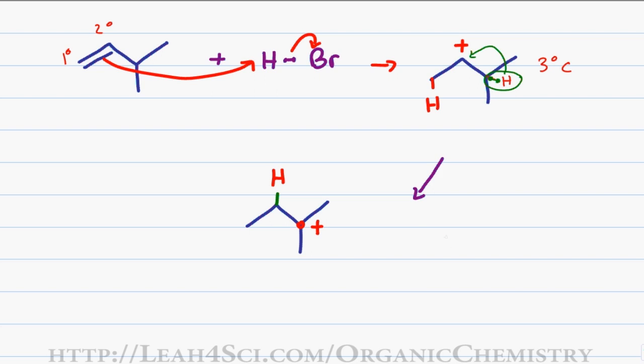And since the carbocation that forms is a lot more stable, this will happen rather quickly. And when the bromide ion in solution comes to attack, it winds up attacking at the tertiary rather than the secondary position. The final product for this molecule is a bromine added in a tertiary position, despite the fact that the double bond only started out between a primary and a secondary carbon.